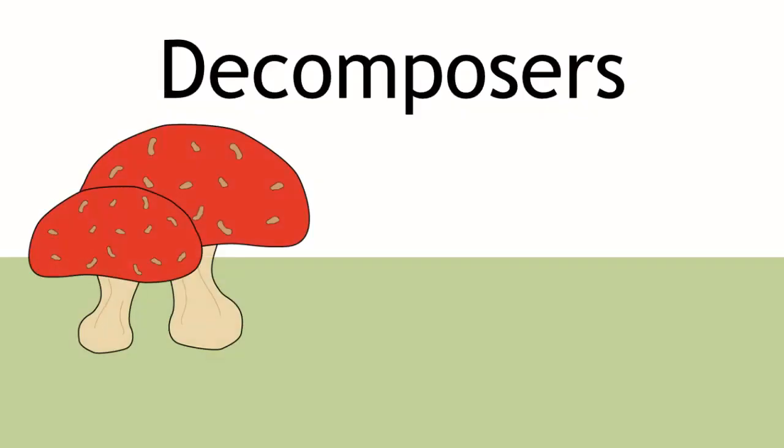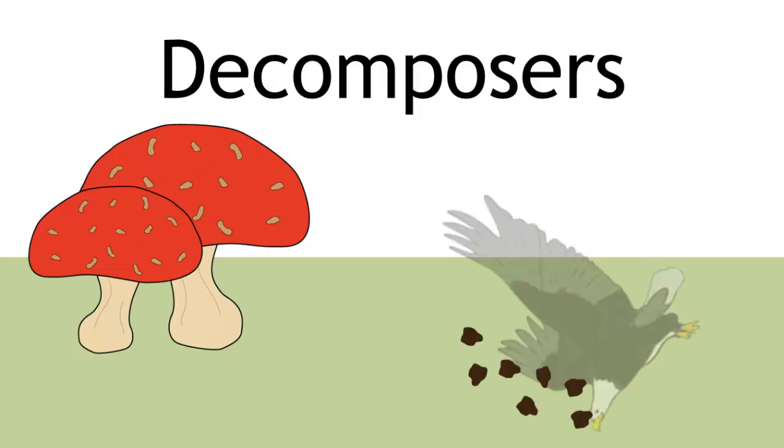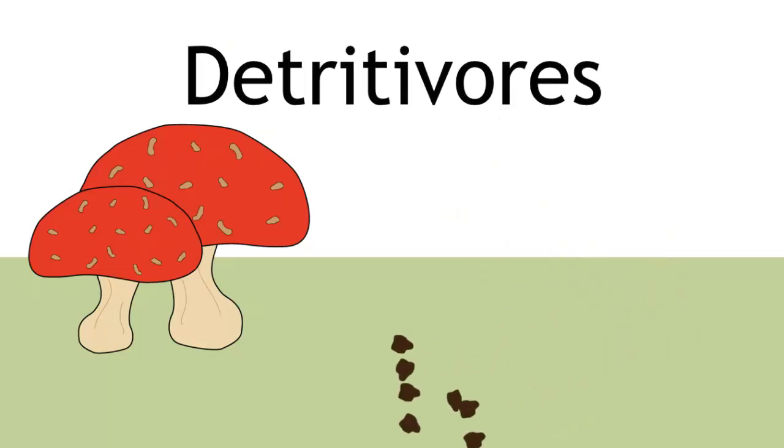Decomposers are also considered to occupy their own trophic level. They break down dead animal and plant matter, also known as detritivores.